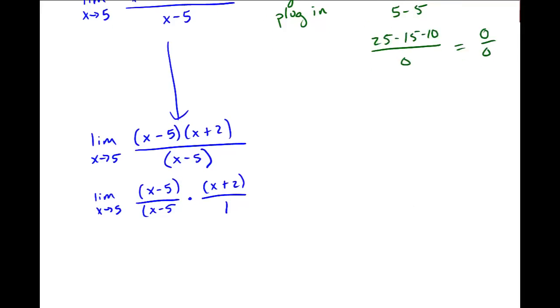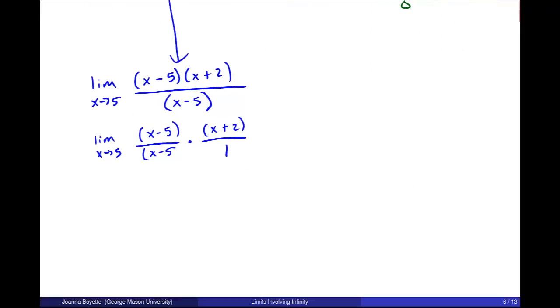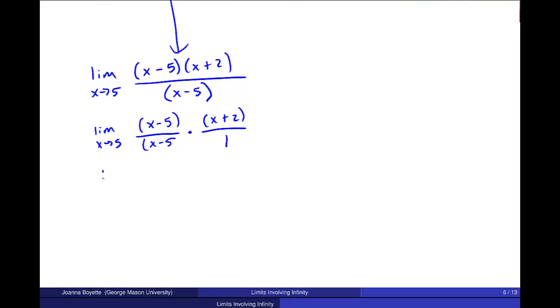Now, I'm going to split this up into two limits using the properties that we have. And the limit as x goes to 5 of x plus 2 over 1.